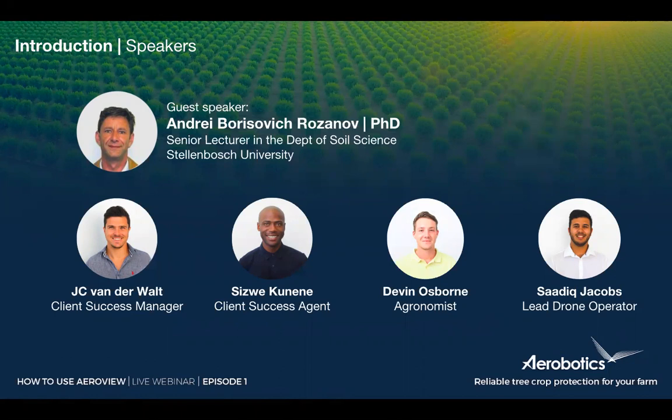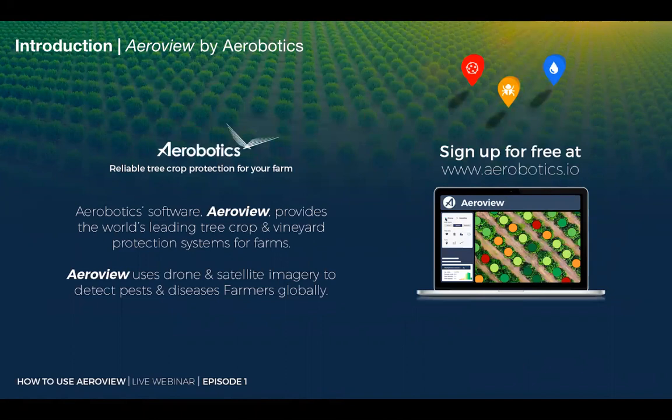For those joining us who don't know what Aerobotics is: it's a web-based platform that helps farmers identify problem trees in their orchards early on. AeroView, along with the AeroView Scout, gives farmers all the tools to go straight to those problem areas and see what's causing the issues. We operate across South Africa and in about 11 different countries internationally.